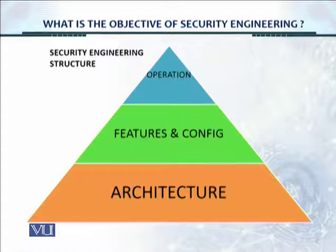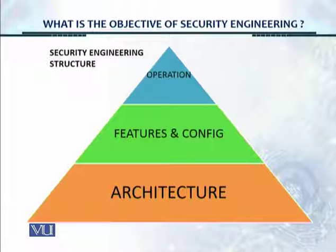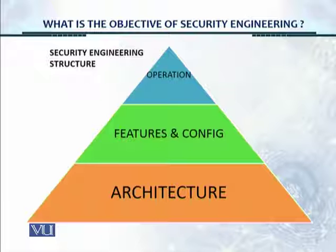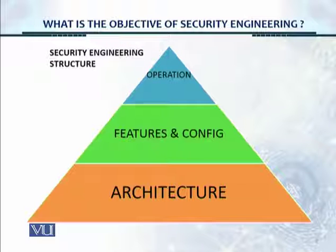This is the importance shown in the form of a pyramid. The most important aspect of security engineering is the architecture — the topology of the network. When we talk about architecture, we're talking about the placement of devices, the topology, the network design, and the traffic flow. The next most important aspect is features and configuration.